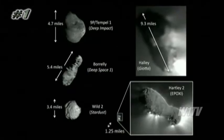And then we've also got another bowling pin, comet Borley. These are actually well-known simply because there are only five comet nuclei that we've seen up close — that's it, five of them — and they're all here to scale.